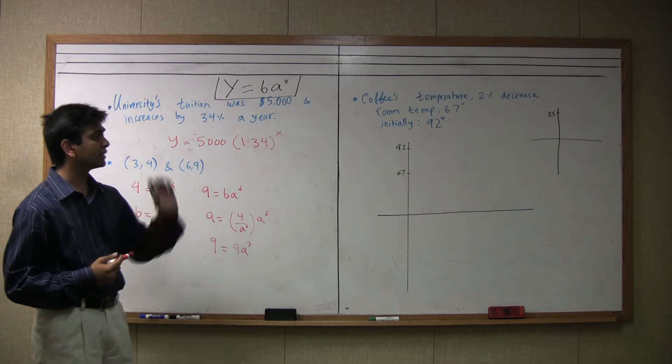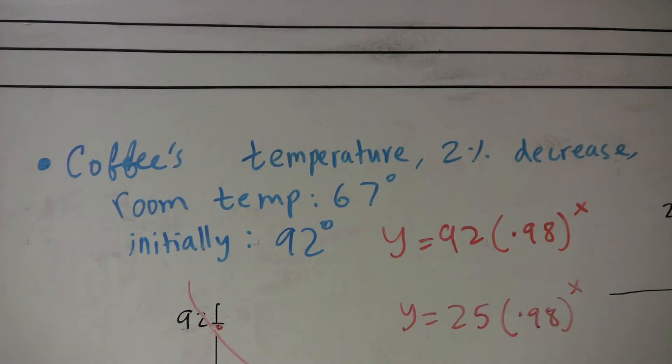Well, now let's take a look at this problem over here. The coffee's temperature is initially 92 degrees, it decreases by 2% a minute, and the room's temperature is 67 degrees.